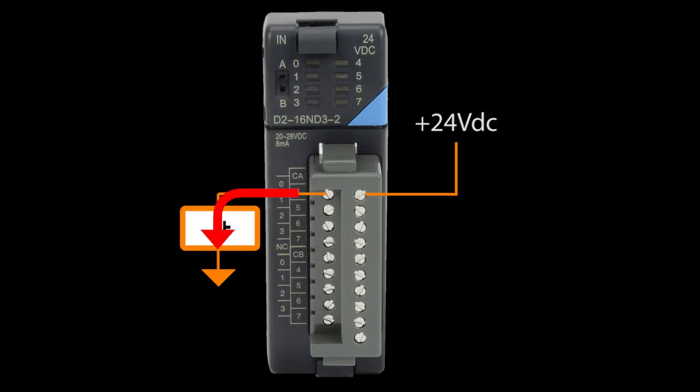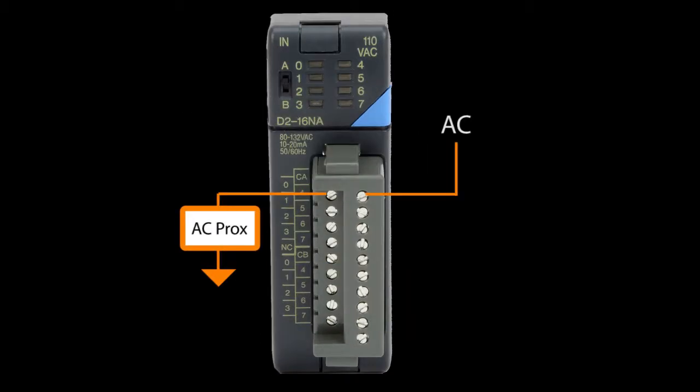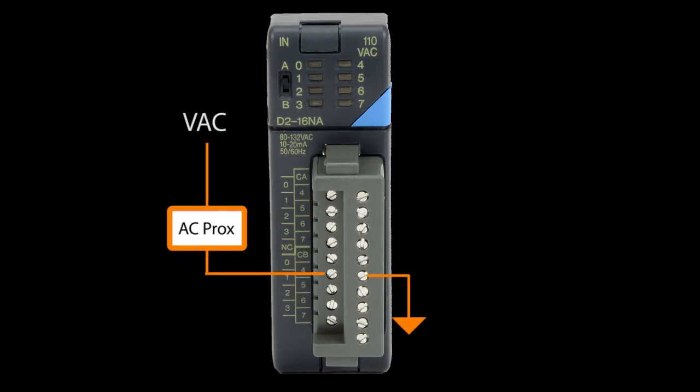Mechanical switches can be connected as either sinking or sourcing. It doesn't matter. AC proximity sensors can also be used for sinking or sourcing. Just make sure you have an input card that can handle the AC voltage.